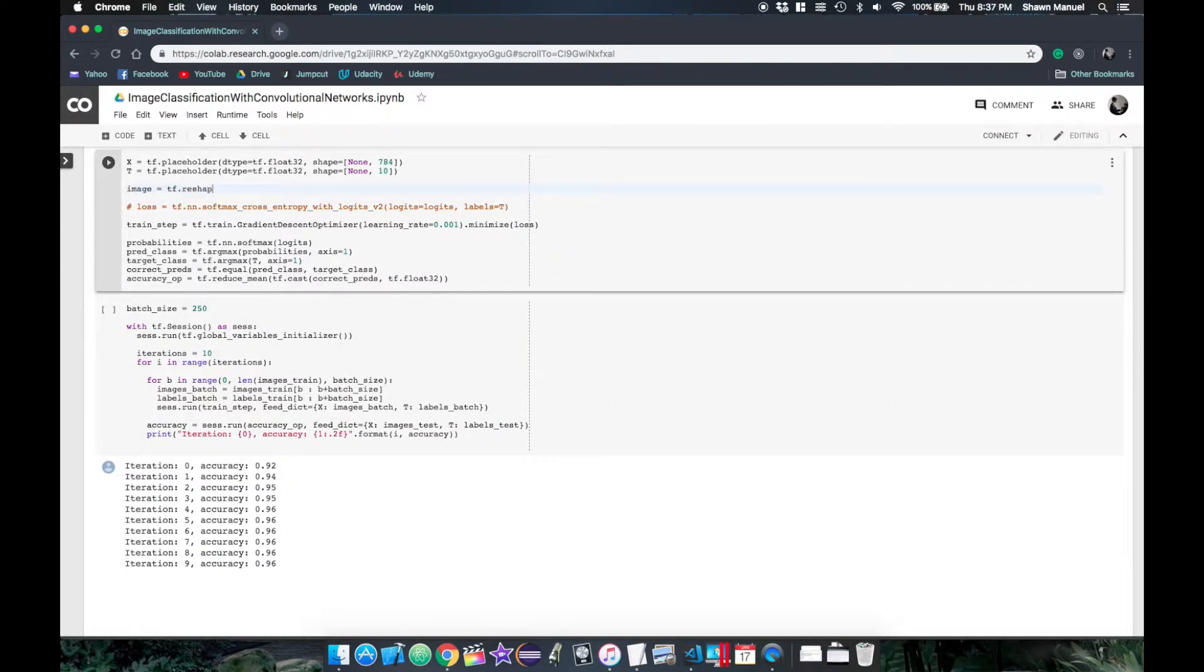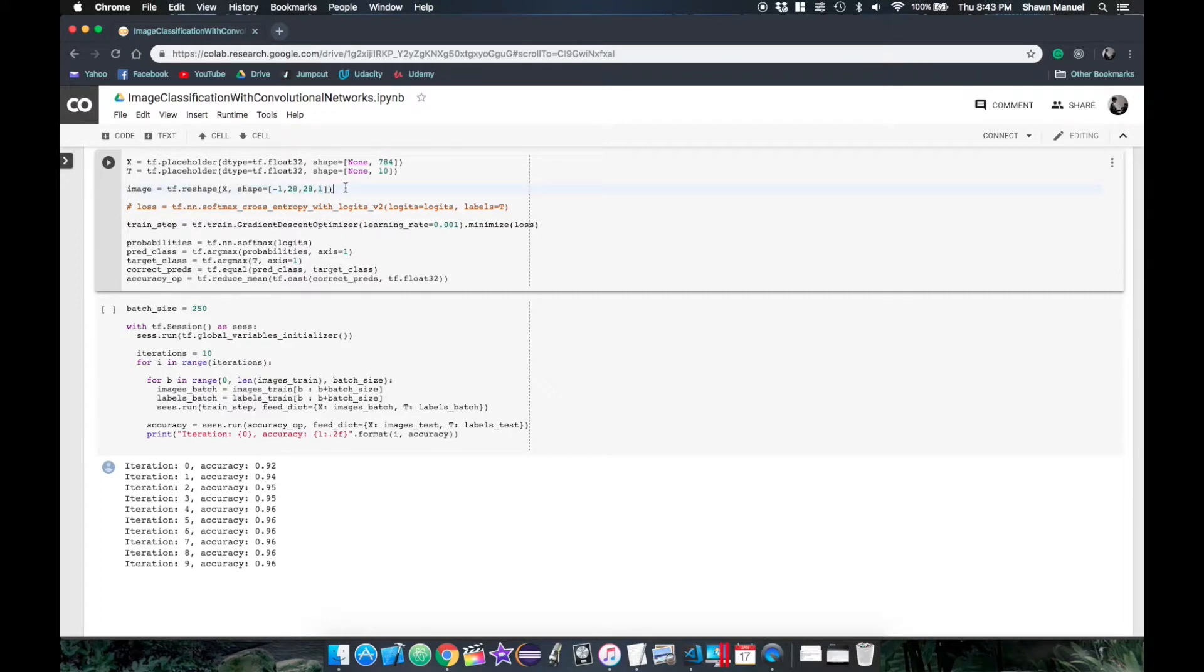So first, we will reshape our input to its original dimensions but with an extra third dimension being 1 since our image is grayscale and has a single channel. Next, we can pass that input to our first convolutional layer operation found in tf.layers.conv2d where we can also specify the number of filters and also the filter size as a parameter called kernel size which takes the tuple over the filter's height and width dimensions.